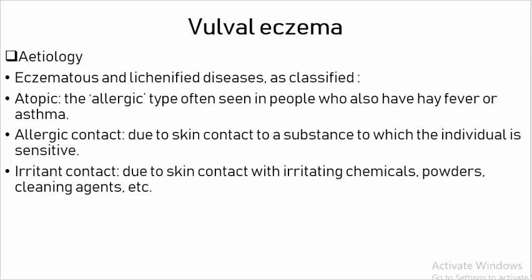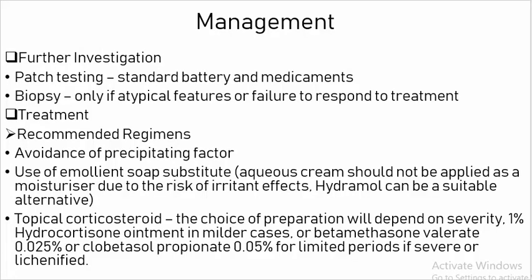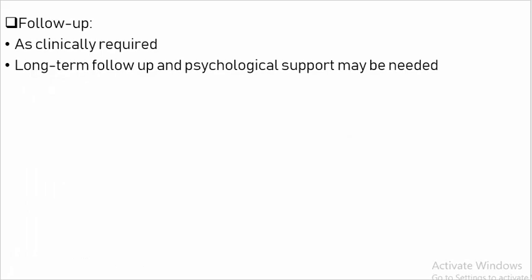Vulval Eczema. Etiology: Eczema — allergic contact and irritant contact. Clinical Features — Symptoms: Vulval itch and soreness. Signs and Complications: Secondary infection. Diagnosis: Clinical presentation and general examination of the skin. Management — Investigation: Patch testing, biopsy. Treatment: Avoid precipitating factors, use of emollients, soap substitutes, and topical corticosteroids. Follow-up: As clinically required. Long-term follow-up and psychological support may be needed.